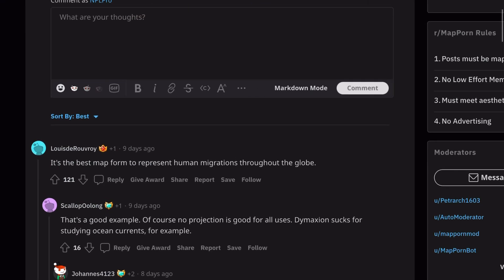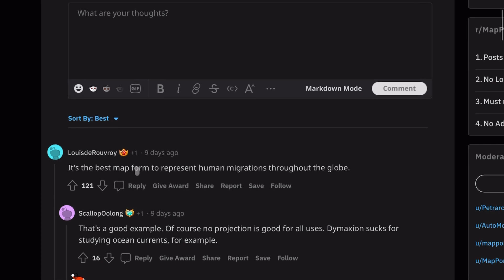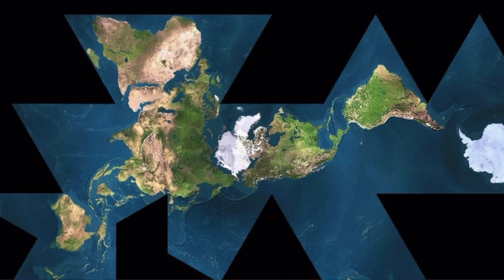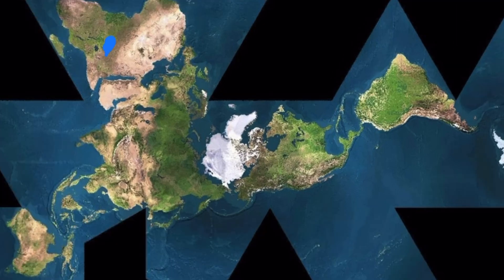And if we come back to reddit, one of the top comments here is that this is the best map to represent human migration throughout the globe. And that's just a byproduct of this perspective. We can see how people originated in sub-saharan Africa and from that point it was very logical to migrate to the Middle East, Asia, Europe, North America through the land bridge and so on.